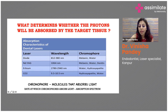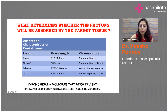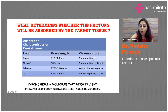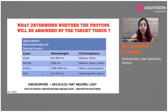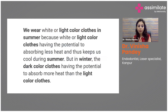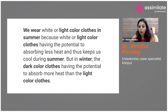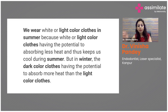A chromophore is a molecule that absorbs light. The rate at which chromophores absorb light is also known as the absorption spectrum of that laser. Looking at the table of wavelengths, you can see which laser is friendly to which chromophore of the tissue. Diodes are highly absorbed in melanin and water, while Nd:YAG is highly absorbed in melanin, water, and dentine. Diodes also have an affinity for hemoglobin. Erbium lasers are more friendly to water and hydroxyapatite, and carbon dioxide is friendly to hydroxyapatite and water. You can understand the chromophore concept through the example of clothing colors: light-colored clothes absorb less heat in summer while dark clothes absorb more heat in winter.